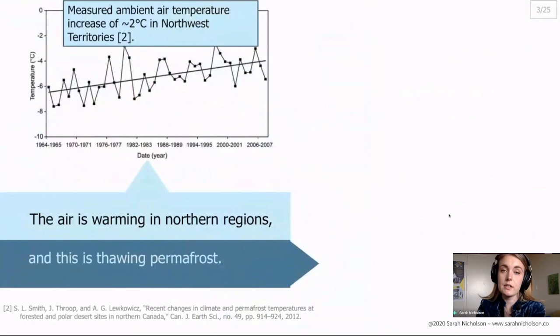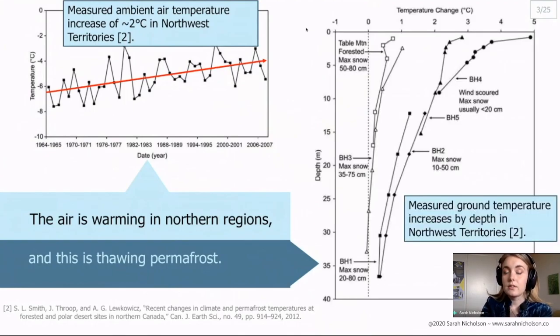So what happens with climate change in these areas? We've measured in the Northwest Territories an increase in ambient air temperature of two degrees over time. This has led to a warming of the ground. So here this is zero, which is the ground surface, and this is going down below the ground on this axis. Here we can see the change in temperature, and this is increasing in temperature due to the ambient air temperature increases. With permafrost, which is a region of soil at or below zero degrees Celsius, this can mean that this area of permafrost will be melted.